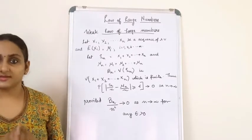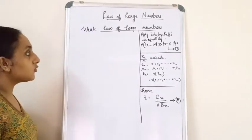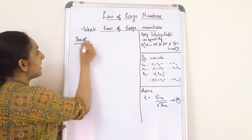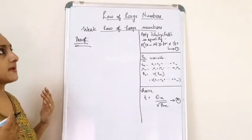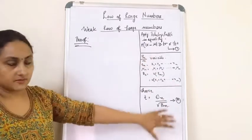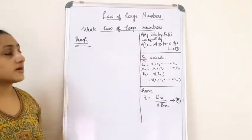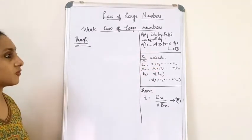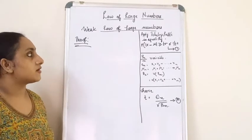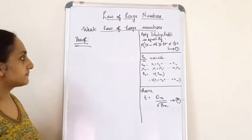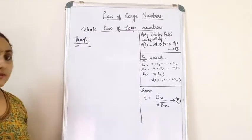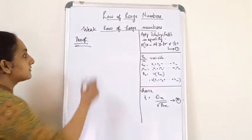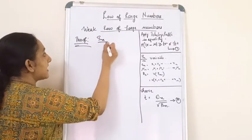So let's have a look at the proof. I have written all the valuable information that was given to us through the statement. Now I am going to apply Chebyshev's inequality, considering the form: probability of |x - mu| >= t*sigma is less than or equal to 1/t-squared. The variable I am going to consider is Sn/n.